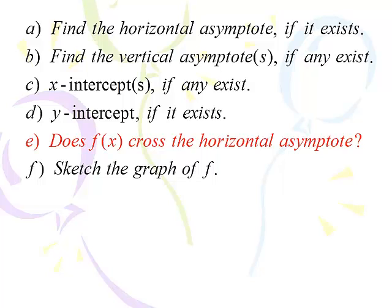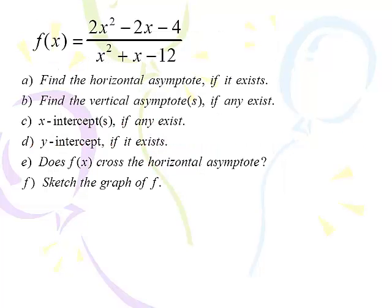We're still answering the same questions as before: horizontal asymptote, vertical asymptote, x-intercept, y-intercept, and then sketching it. We're adding part E: does f of x cross the horizontal asymptote? Here's our first function: f of x is equal to 2x squared minus 2x minus 4, all over x squared plus x minus 12.